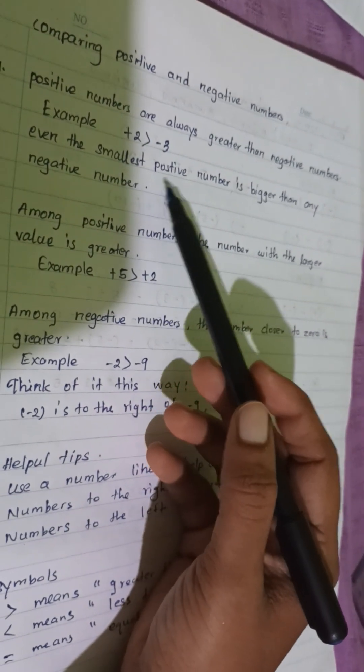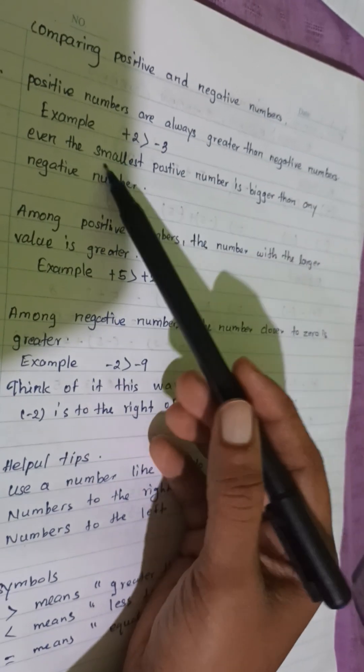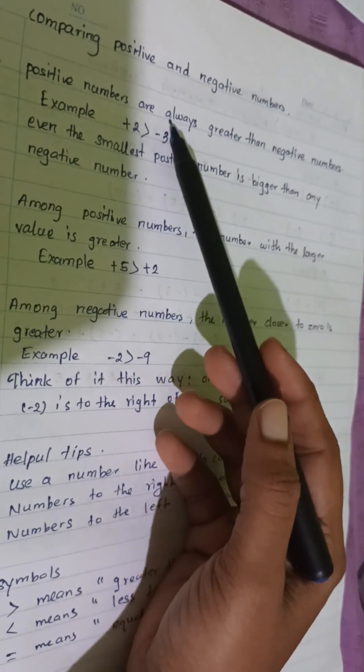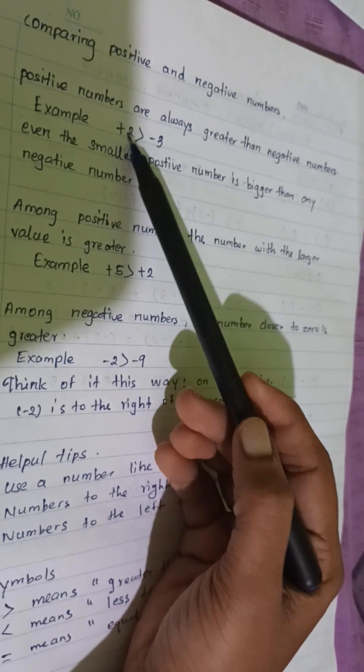Even the smallest positive number is bigger than any negative number. Plus 2 is the smallest positive number.